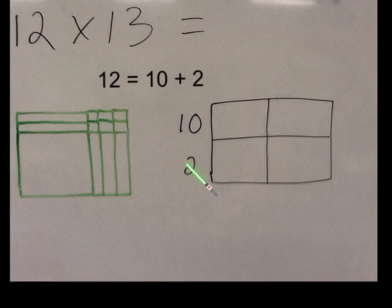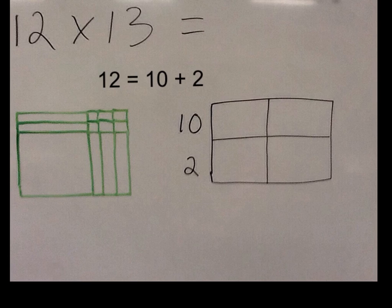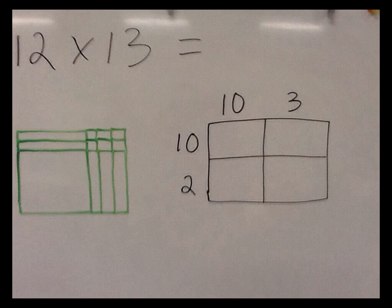You can just write down the number 12 this way: 10 plus 2. You don't need to write the sub step. And for the second factor in this problem, it's 10 plus 3. So now we've got the problem set up.